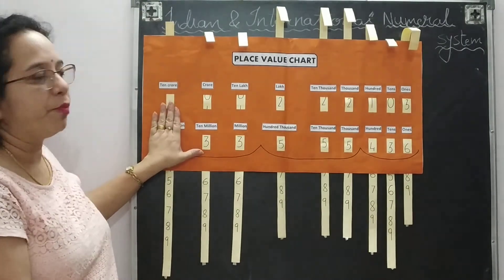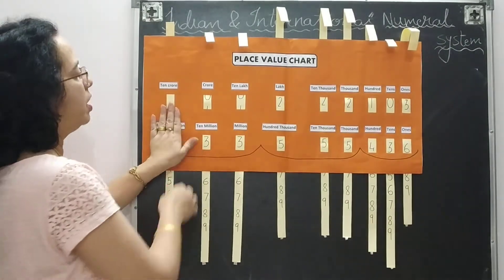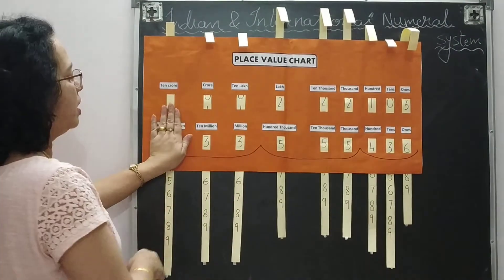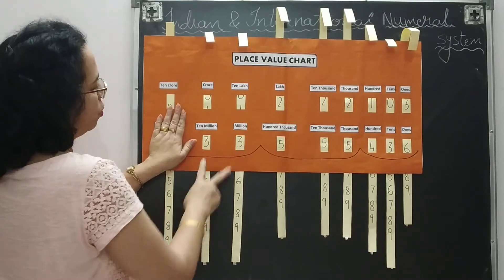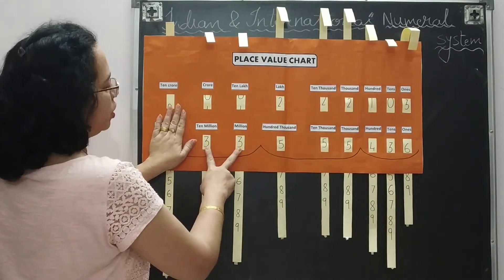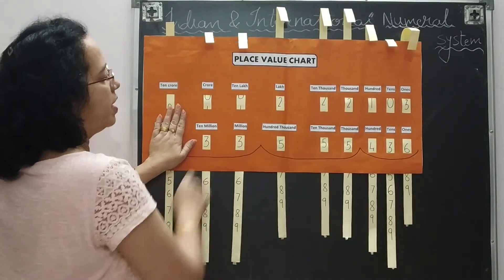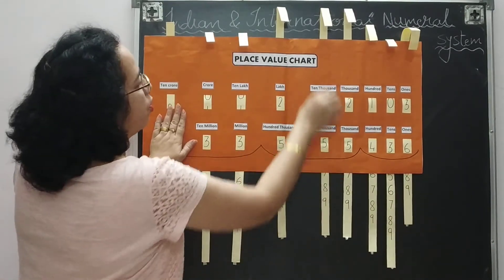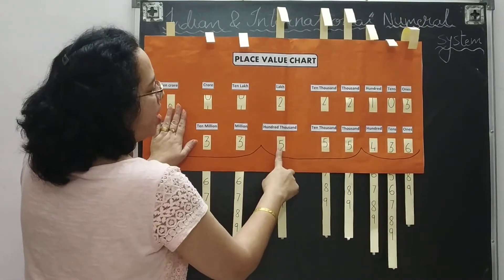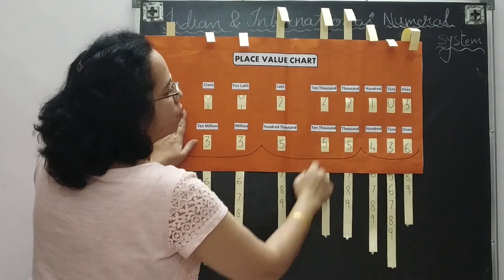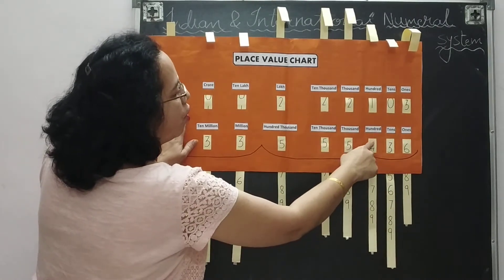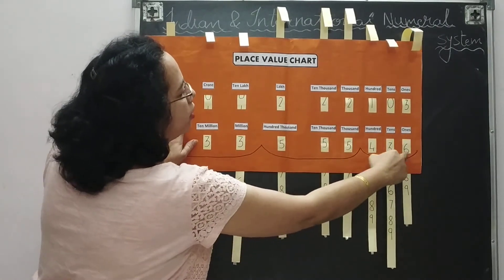Just now suppose this number is not there — suppose this one is zero. So how to read the number? It becomes 33,555,436.